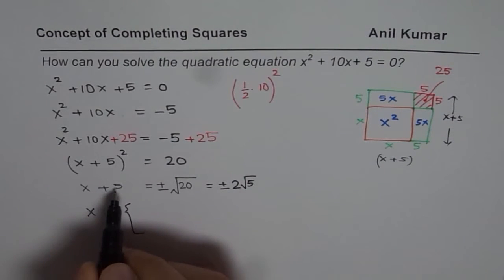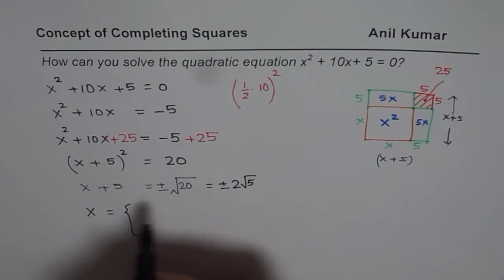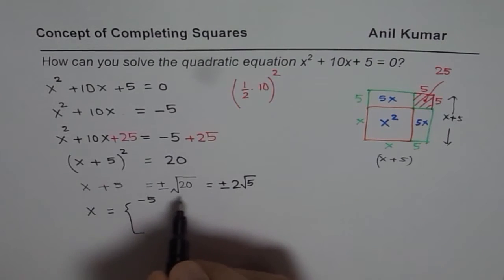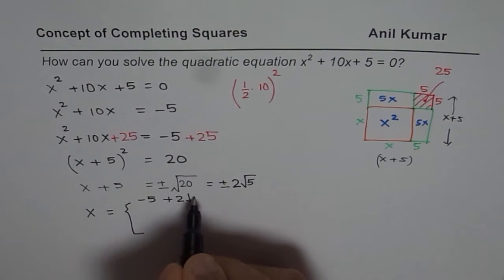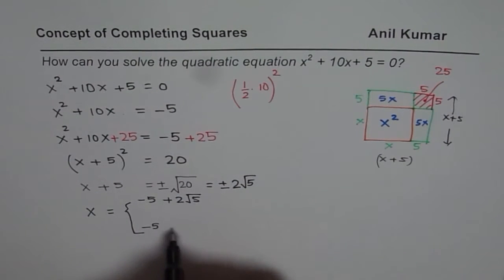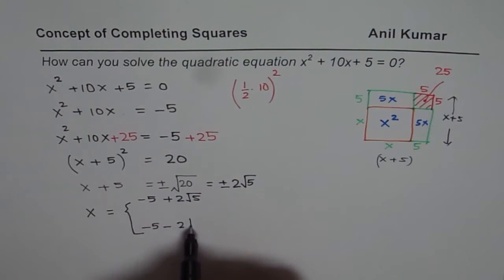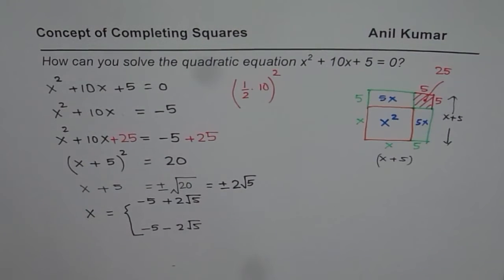It could be either -5 + 2√5 or it could be -5 - 2√5. That's the exact solution. If you want the solution in decimal places, you need to calculate using the calculator.